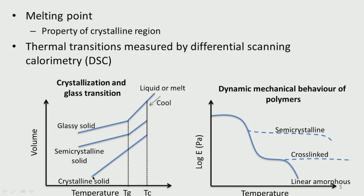For example, for a crystalline solid, as temperature increases, it occupies more volume. For a semicrystalline solid, you will see a transition — this is called the Tg. Similarly, for glassy solids, you will also have a Tg. The dynamic mechanical properties also start going down. That is why temperature is very, very important.